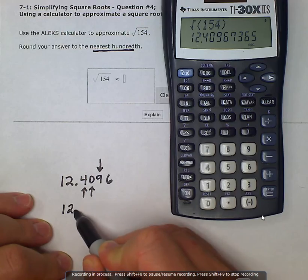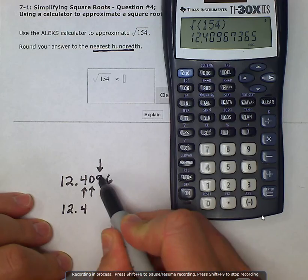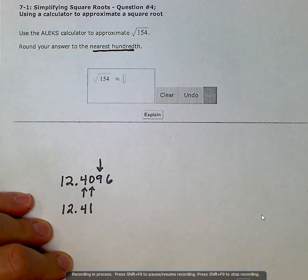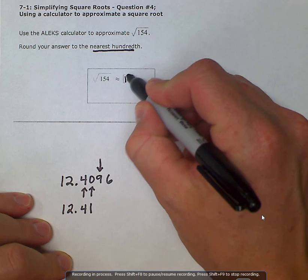So we have our final answer of twelve point four nine rounds this zero up to one. So our approximation then is twelve point four one.